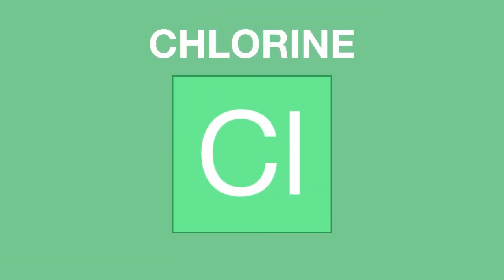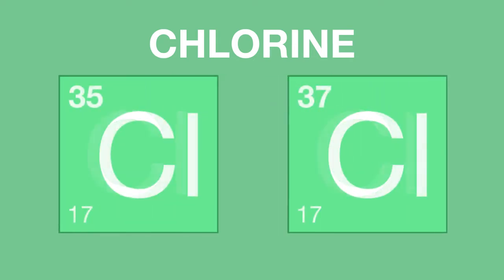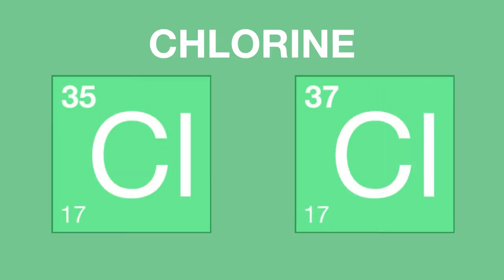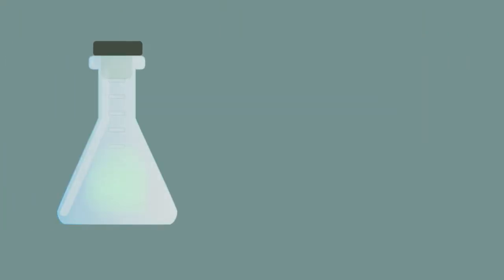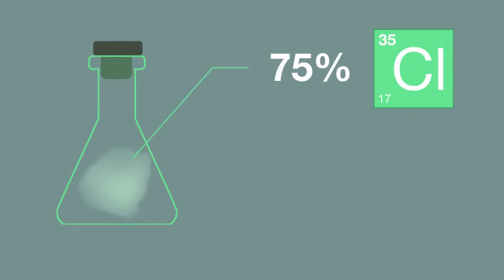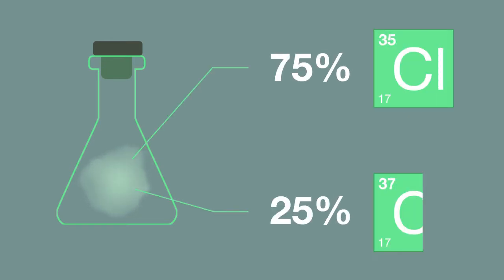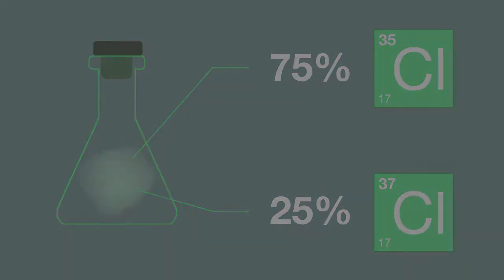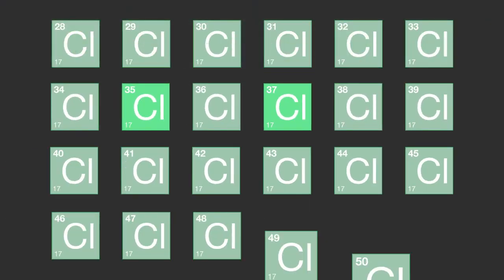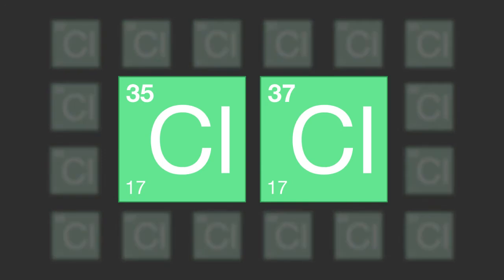The two most common types of chlorine atom in the world around us are chlorine-35 and chlorine-37. If we took a sample of chlorine gas, we would find that it was made up of approximately 75% chlorine-35 and 25% chlorine-37. There are other isotopes of chlorine, but these two are the most common.